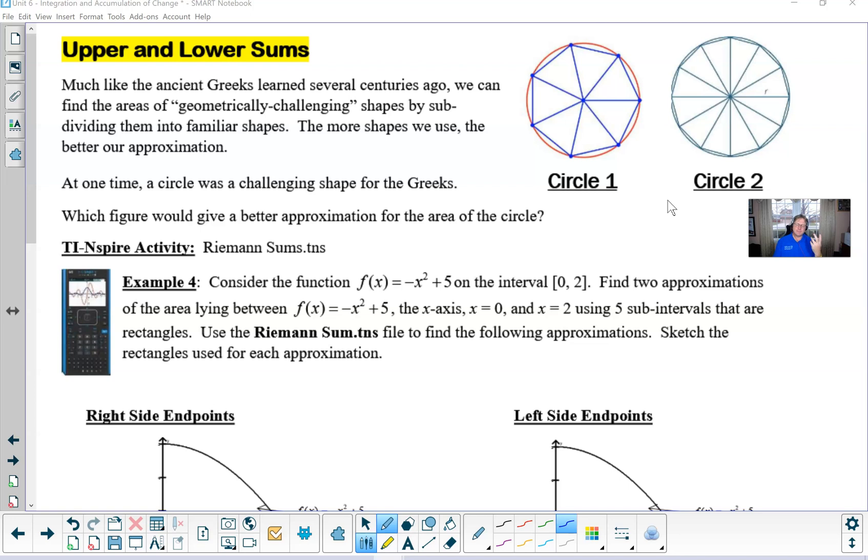At one time, circles were very challenging shapes for the Greeks. This is long before pi was ever discovered. As soon as pi was discovered, and the Greeks had a very approximated method for pi, taking the circumference and simply dividing that by the diameter, they were able to really do some very intricate work with circles.